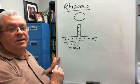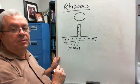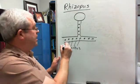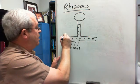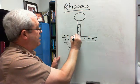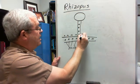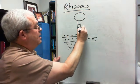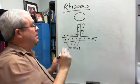What is the chromosome number of all these nuclei? They are all N — every single one of them is haploid.